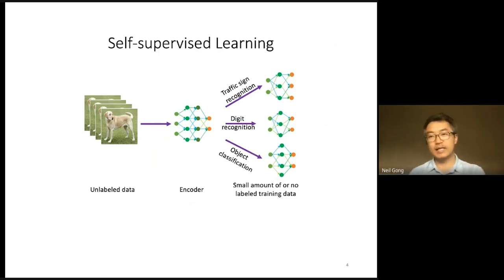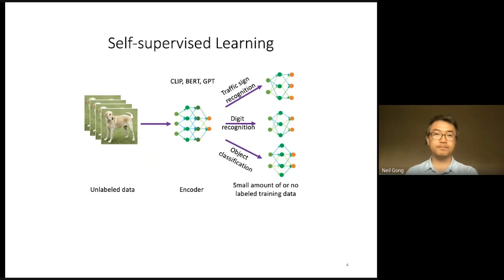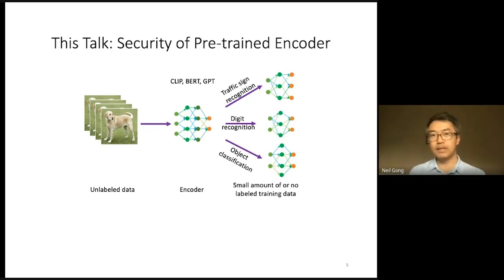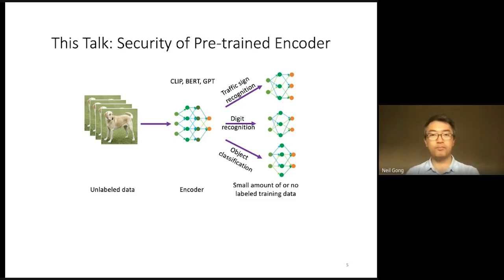Self-supervised learning has made substantial progress in the past several years, and many encoders have been pre-trained by industries — for instance, CLIP, BERT, GPT, and so on. While there are already many studies on improving the accuracy of self-supervised learning, its security aspect is much less explored. So in this talk, we will focus on the security aspect of self-supervised learning. In particular, we will focus on the security of pre-trained encoders in the computer vision domain. By analogy to a computer system, a pre-trained encoder is like an operating system of the AI ecosystem.